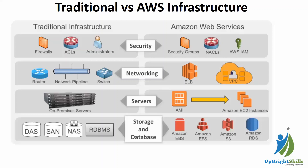For the networking layer in traditional infrastructure, we had our own subnets, switches, network pipelines, routers, and networking devices like Wi-Fi. In AWS, for the networking layer, we use VPC as a service — in VPC we can define subnets, route tables, NAT gateways, and network access control lists. On top of the networking layer, we can use ELB — Elastic Load Balancer — for load balancing between services or EC2 instances.